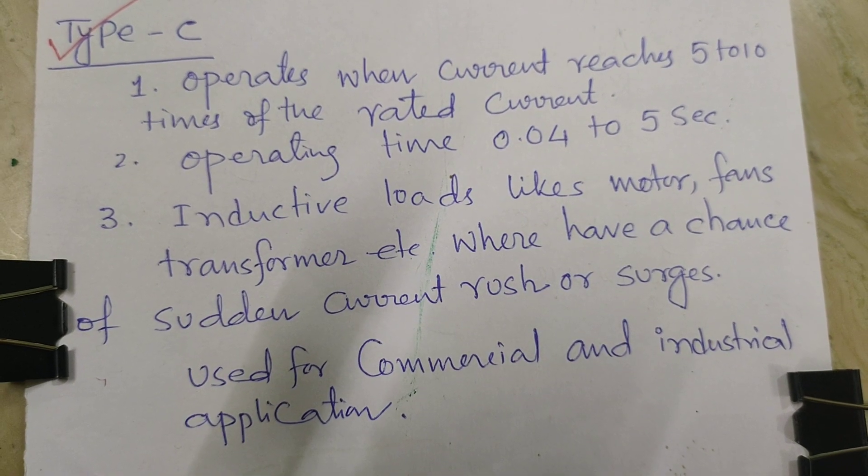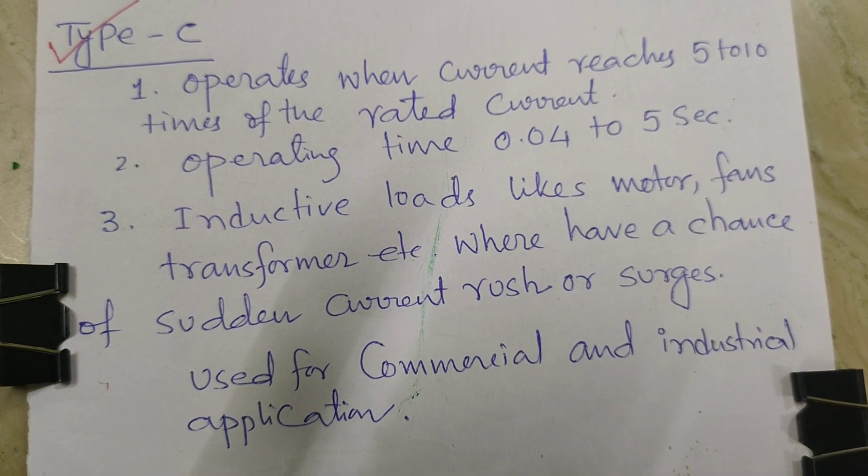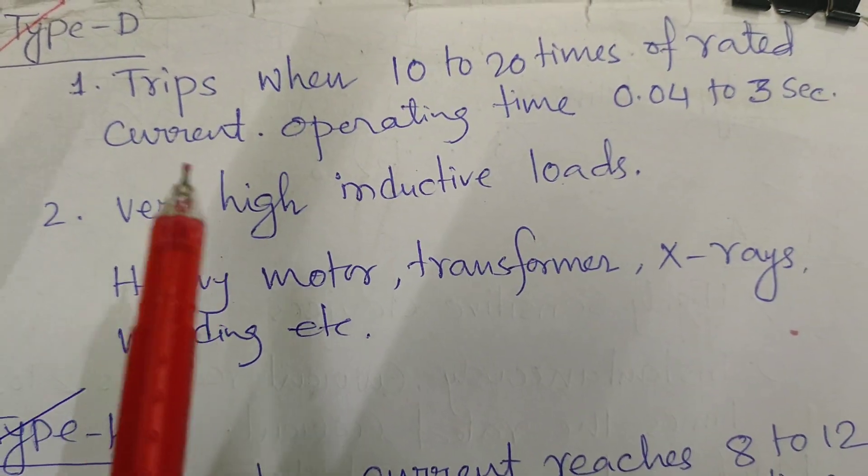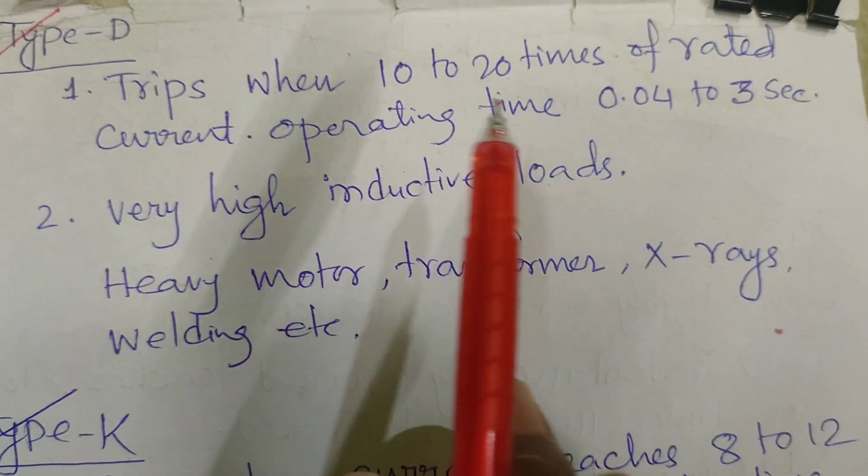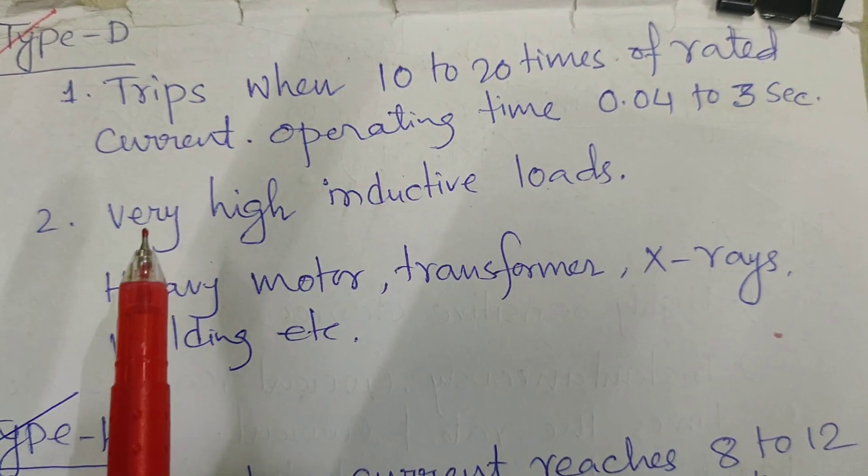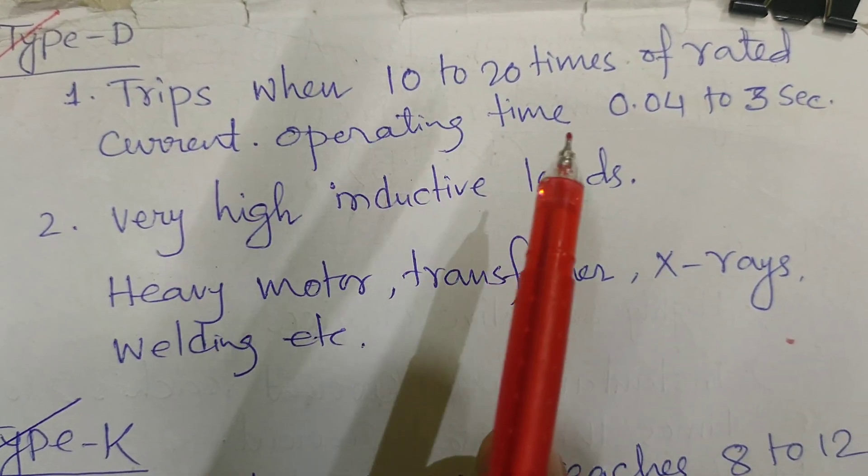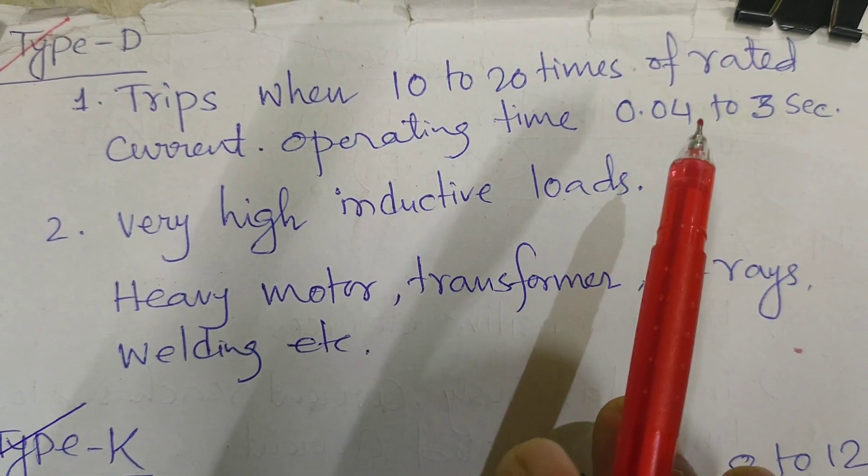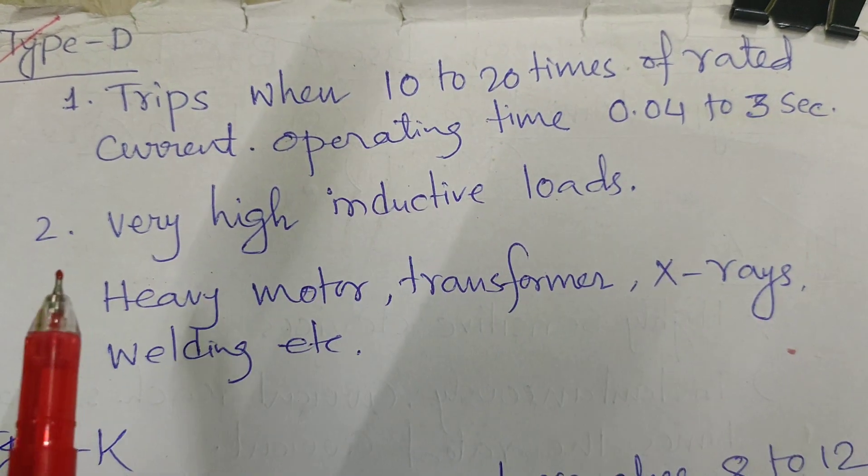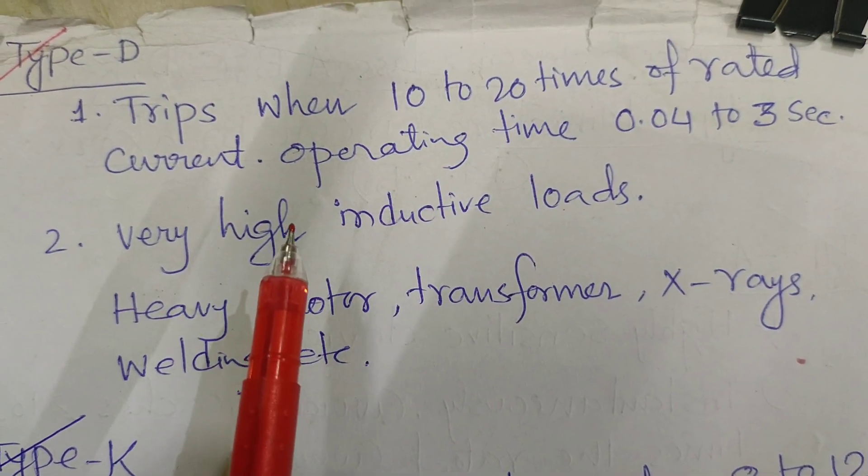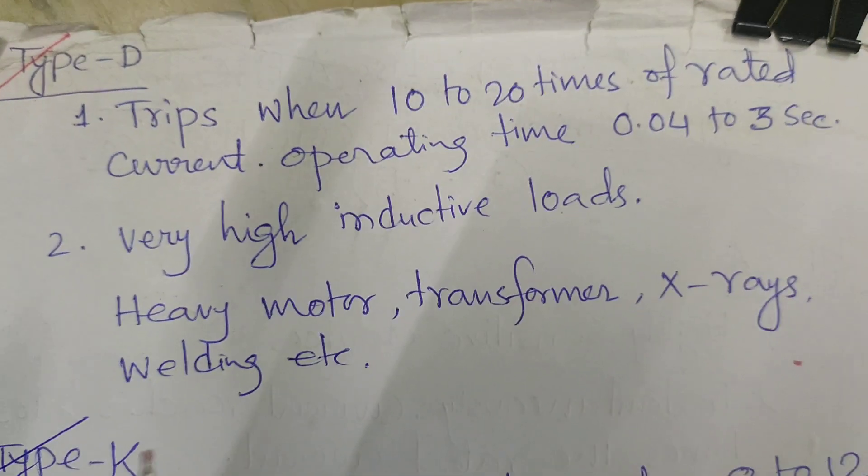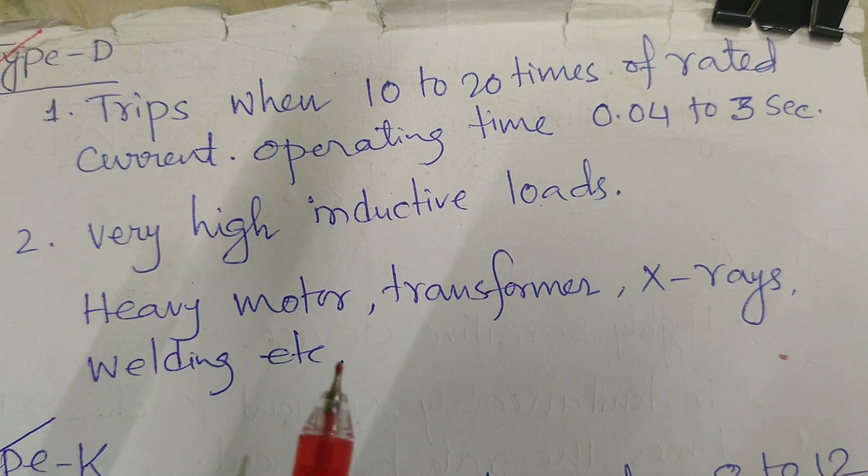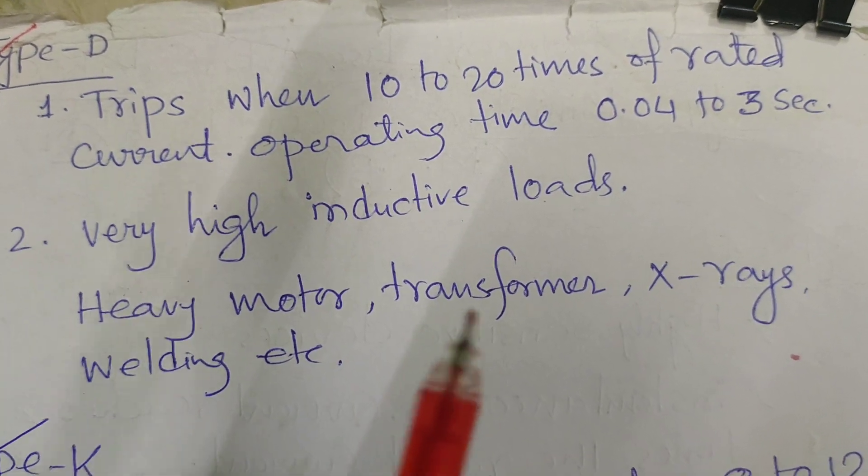D-type MCB has a function of trip when 10 to 20 times of rated current will flow. Operating time will be 0.04 to 3 seconds. It is being used for very high inductive loads, heavy motors, transformers, x-ray, welding, etc. We are using D-type MCBs.